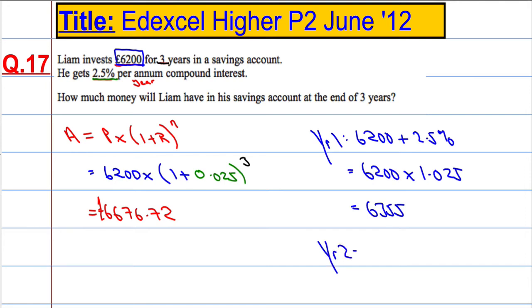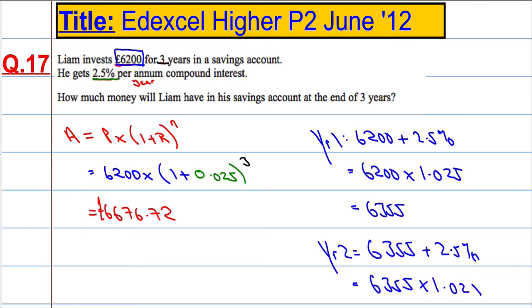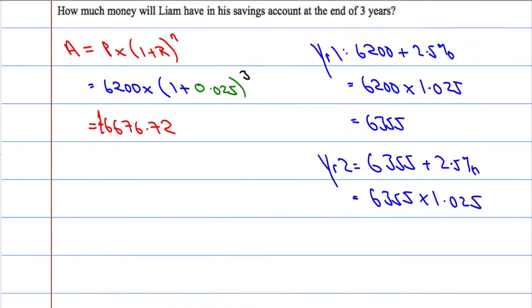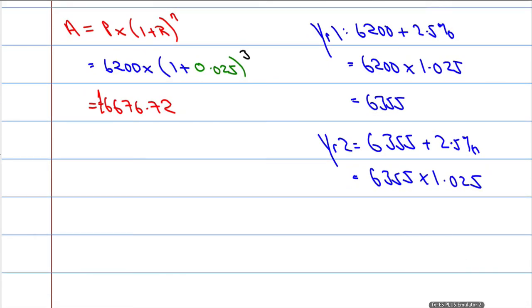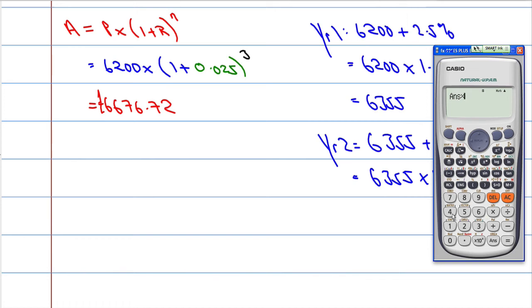At the end of year two, he'll have what he had before — 6,355 — plus 2.5%, which equals 6,355 multiplied by 1.025, which gives us 6,513.875.